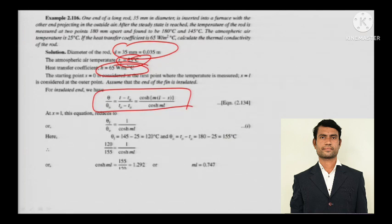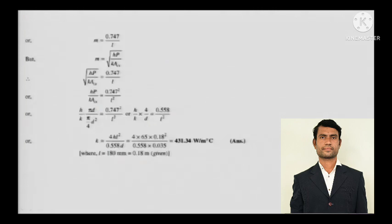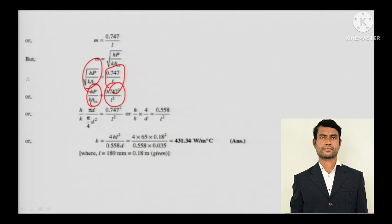For the insulated-end case, the temperature profile equation is used. At a given position x = L, the equation reduces to a solvable form. Substituting the values gives mL, then M is calculated as √(HP/KA). Through straightforward mathematical rearrangement, you can finally calculate the value of K.